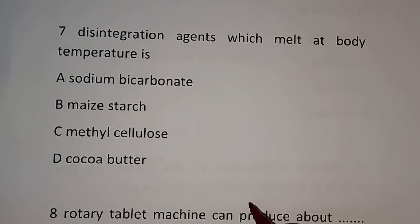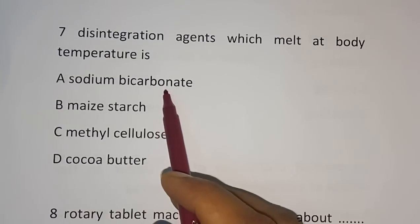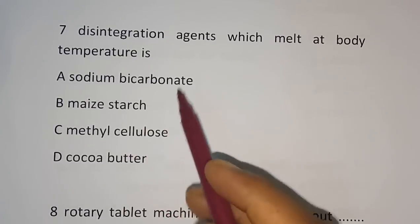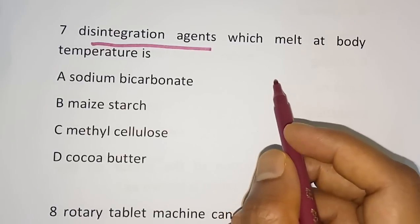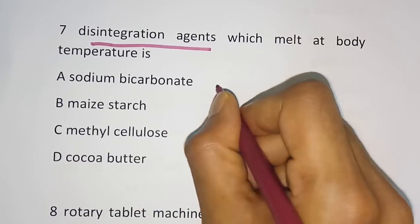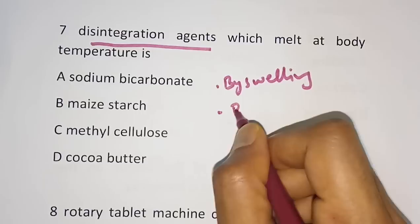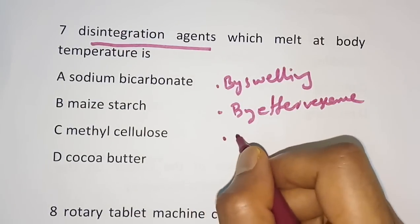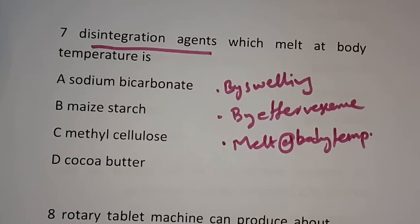Question number 7: The disintegrating agent which melts at body temperature is which of the following? Options are sodium bicarbonate, maize starch, methyl cellulose, or cocoa butter. Disintegrating agents act by three mechanisms: by swelling (e.g., maize starch, potato starch, wheat starch, bentonite), by producing effervescence (e.g., sodium bicarbonate, citric acid, tartaric acid), or by melting at body temperature. Maize starch is the cheapest and most commonly used swelling-type disintegrant.